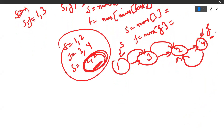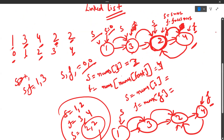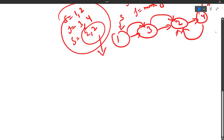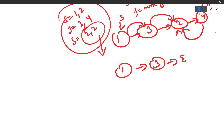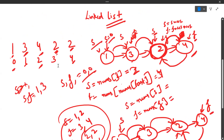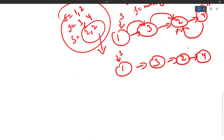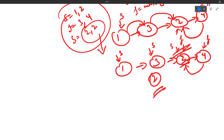When slow and fast become equal again, we stop — that is the starting point of the cycle, and that is the duplicate element. In this case they meet at 2, which is the duplicate. Hope that makes sense. So now let's look at the code for this approach.